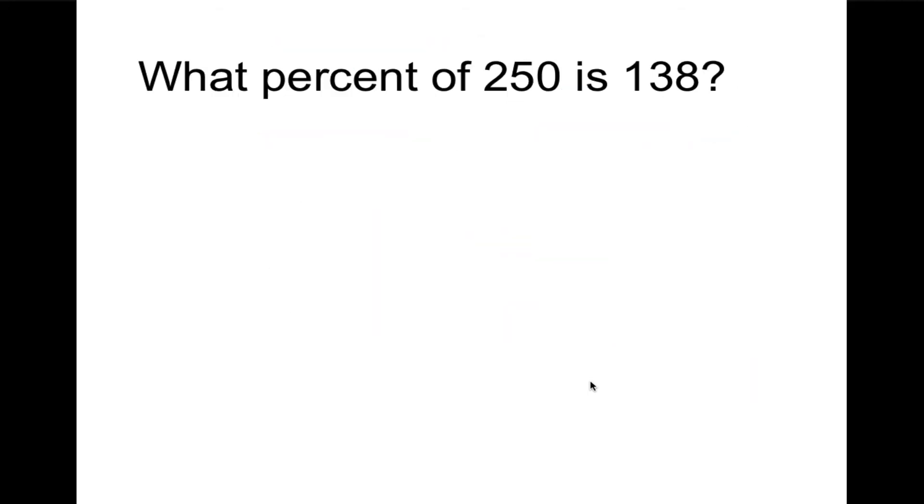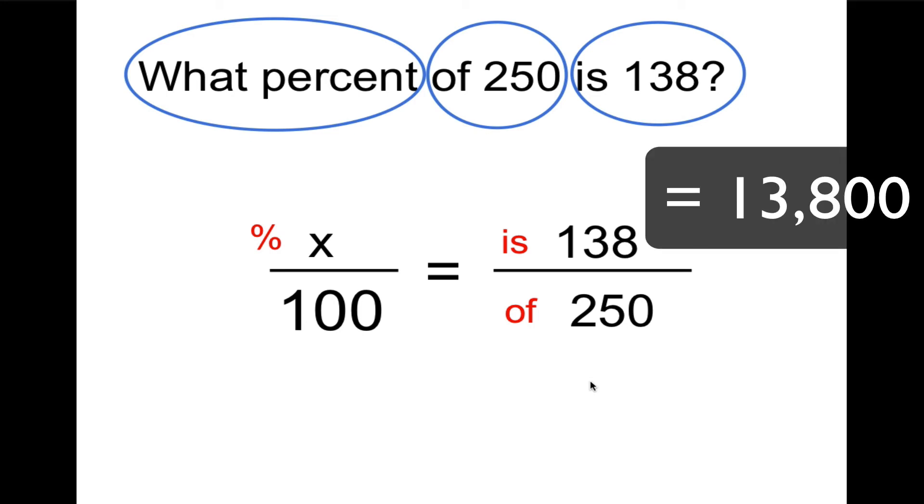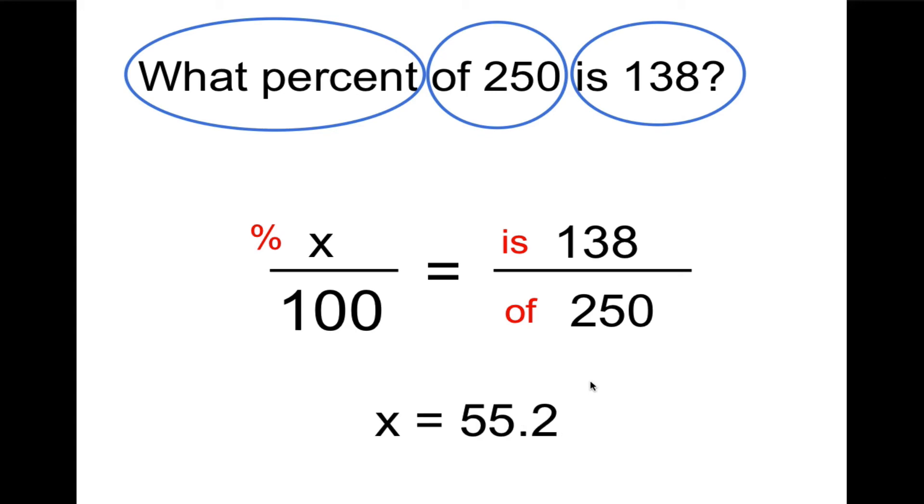Now, here's one that has a different missing part. But I think you could go ahead and solve this on your own. Try it again and check back. So percent over 100 equals part over whole. Well, in this case, we have what percent of 250 is 138. So I'm going to choose a variable. Let's put X. The whole is 250 and the part is 138. In this case, we would multiply 100 times 138, which will give us 13,800 divided by 250. The answer is 55.2.